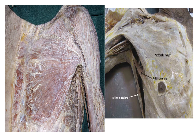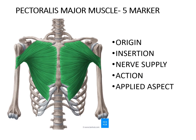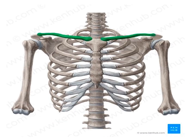Now, this muscle you are seeing here is the pectoralis major muscle. This is a very important 5-marker, so we will be discussing this muscle. Any muscle you have to discuss under the following headings: origin, insertion, nerve supply, action, and applied aspect if present.